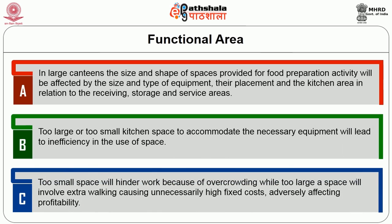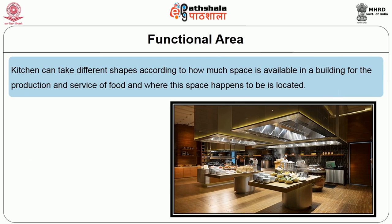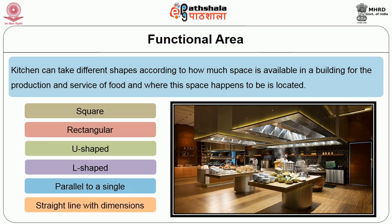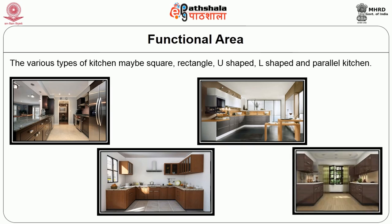A kitchen can take different shapes according to how much space is available and where it happens to be located. Kitchens vary from square, rectangle, U, L-shaped, parallel to a single or straight line with dimensions varying according to the need of the particular catering establishment. The various types of kitchen may be square, rectangle, U, L-shaped and parallel kitchen. Let us see them one by one.